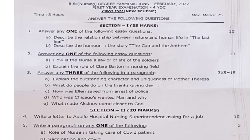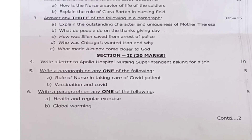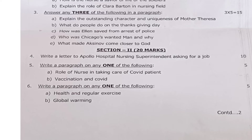Moving on to Section 2, which is for 20 marks. Question 4: Write a letter to Apollo Hospital nursing superintendent asking her for a job — that is for 10 marks. Question 5: Write a paragraph on any one of the following — 5a: Role of a nurse in taking care of a COVID patient, or 5b: Vaccination and COVID. This carries 5 marks.